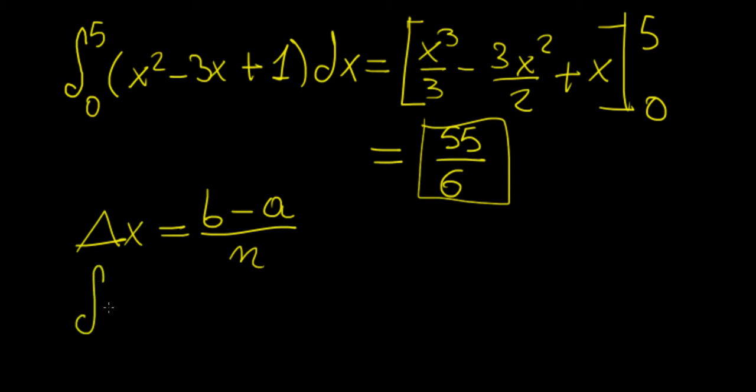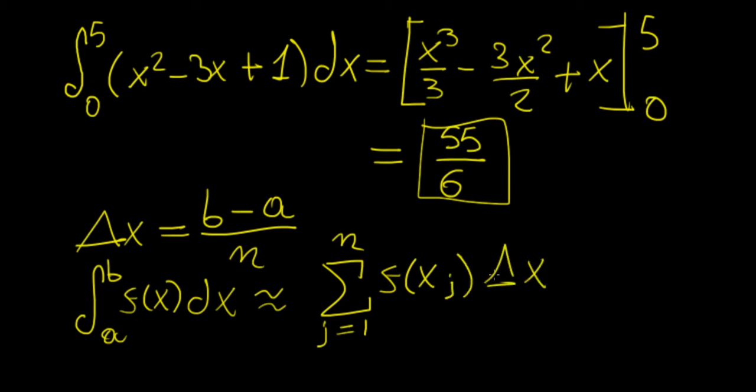We know that the integral itself is going to be approximated by the sum, the Riemann sum, j equals 1 to n of the function times Δx.